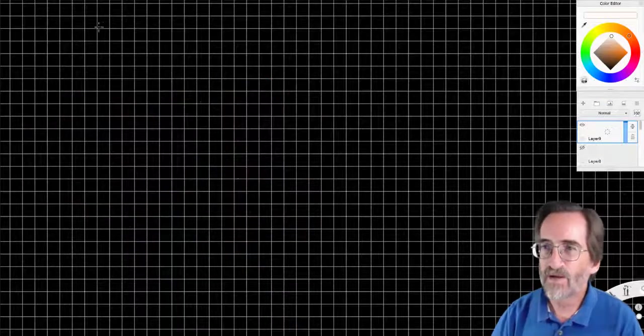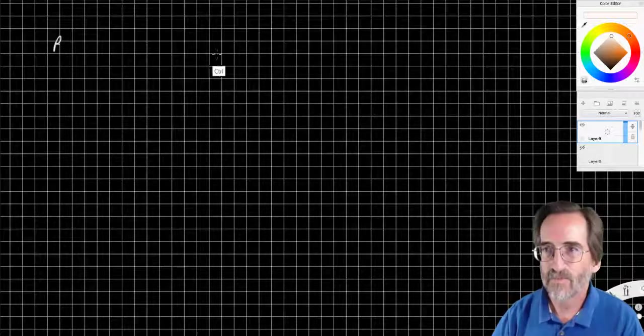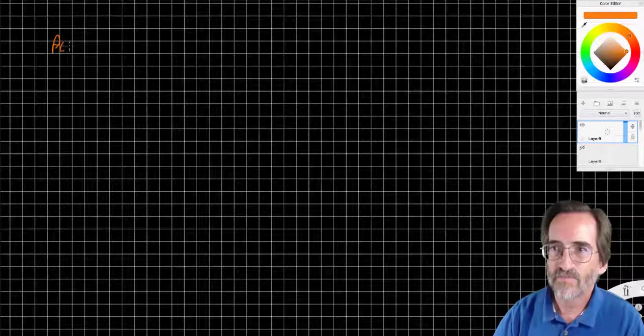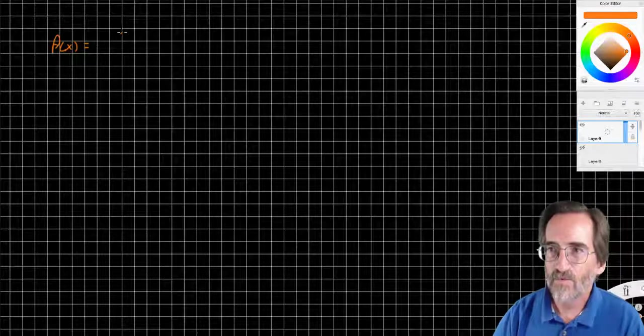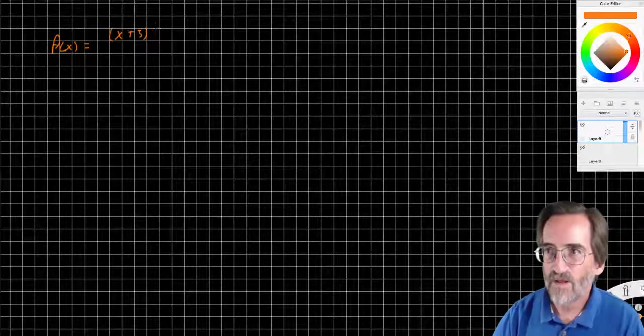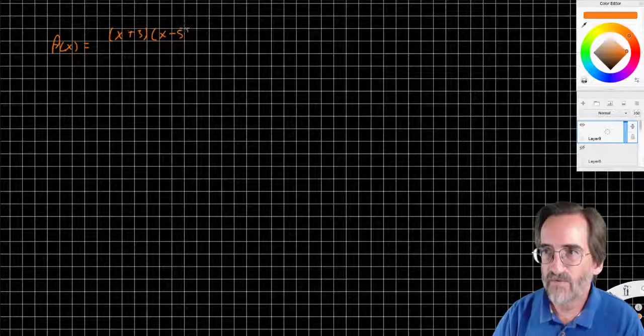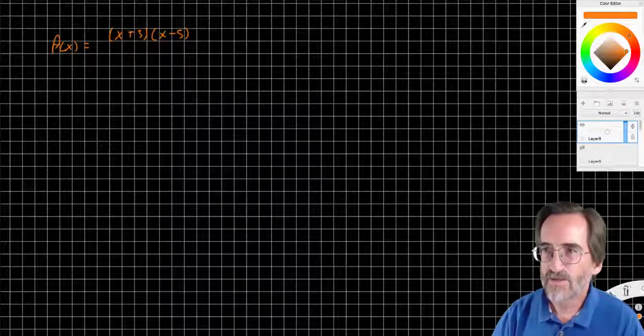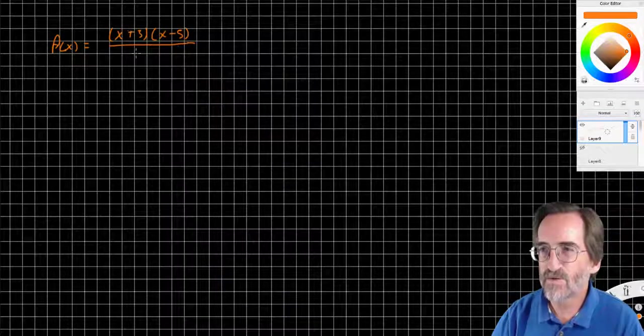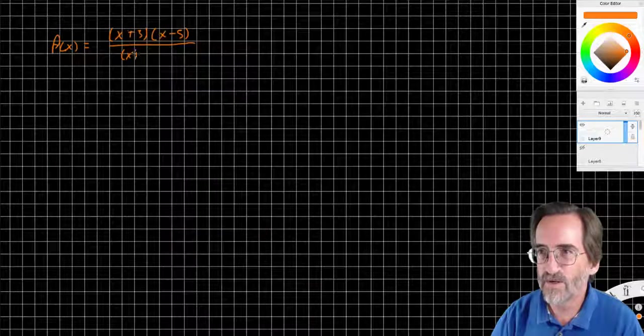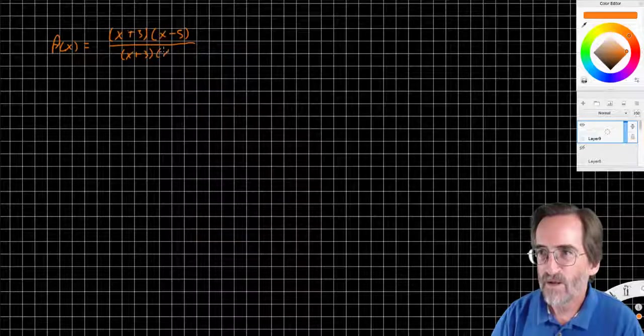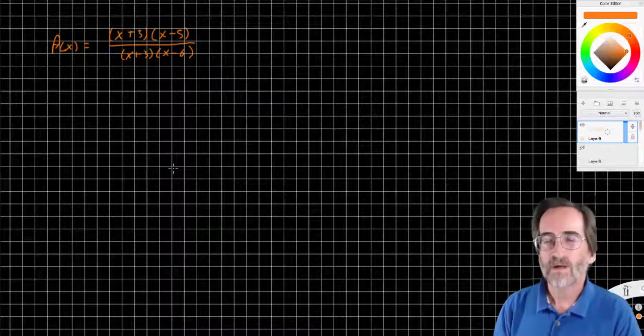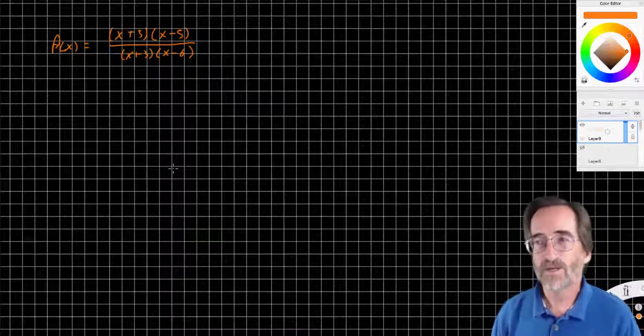So let's say I've got some function, f of x. Let's go f of x equals (x+3)(x-5) over (x+3)(x-6). So, this is going to have some discontinuities.